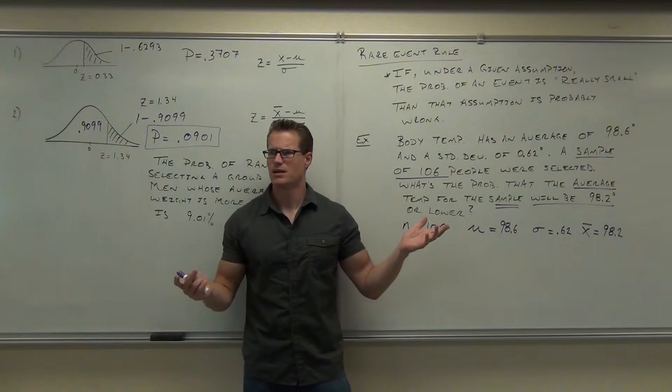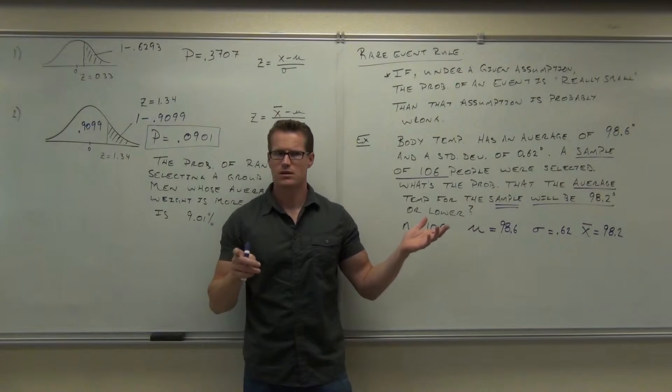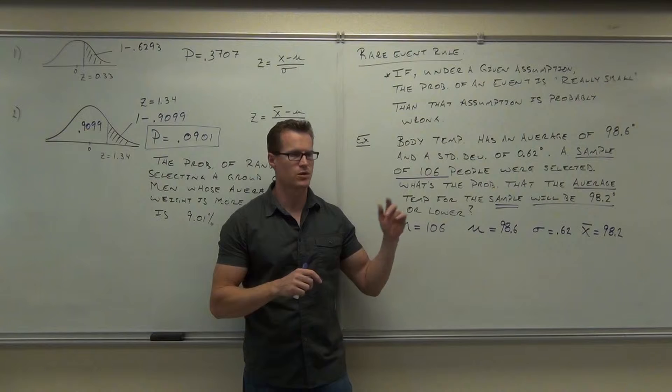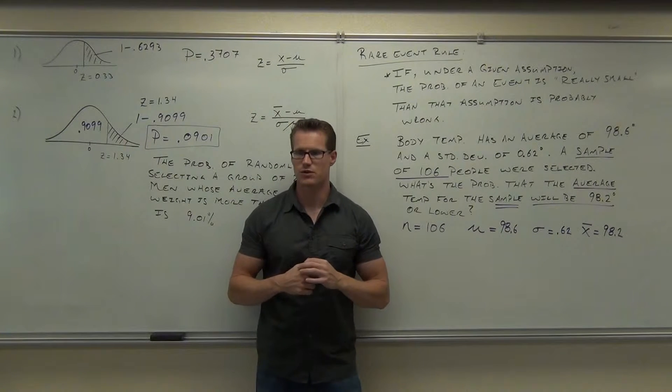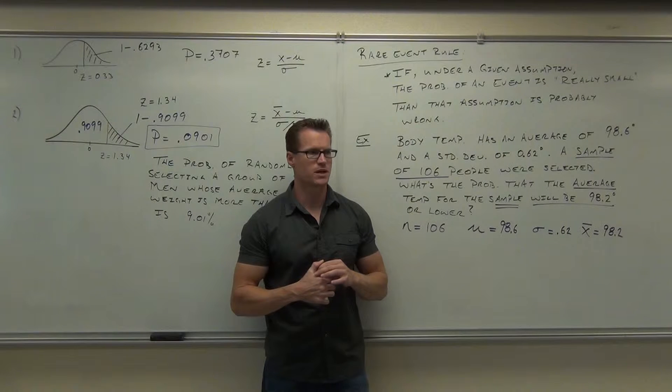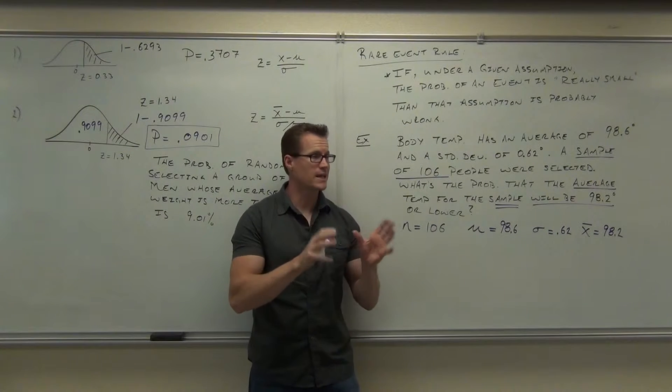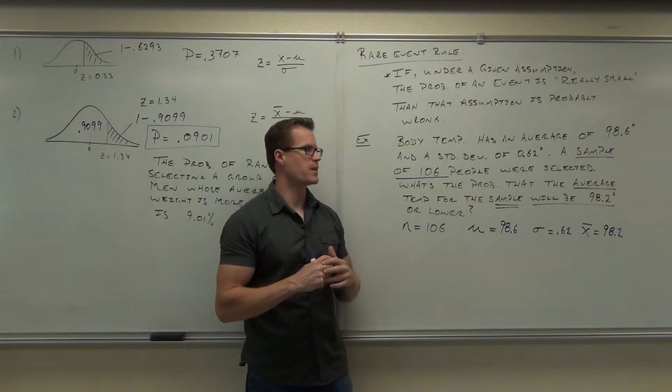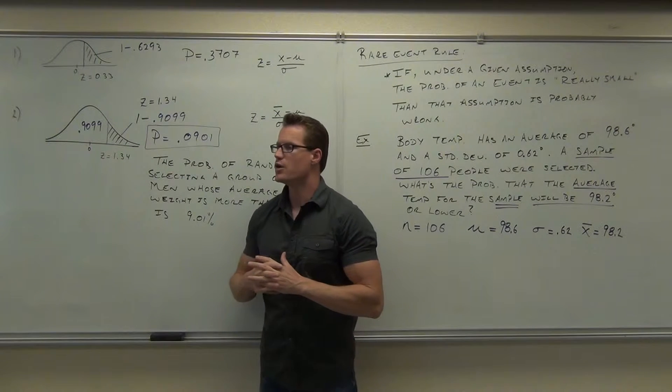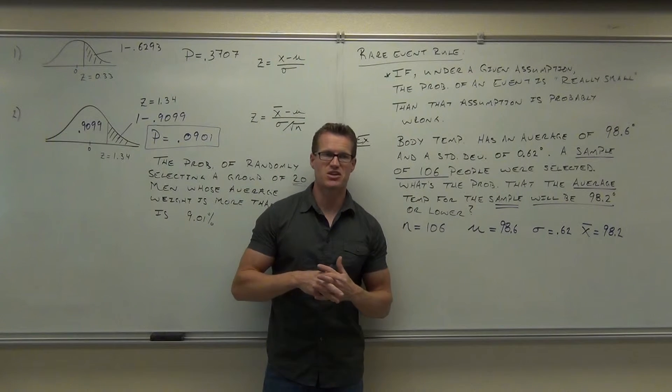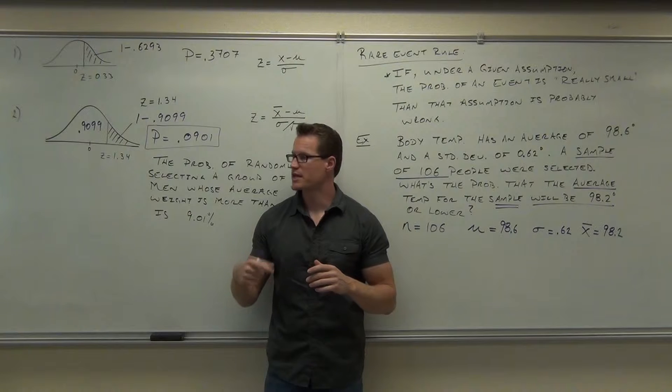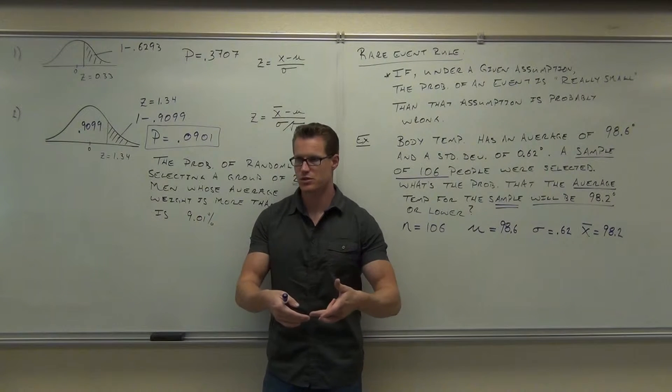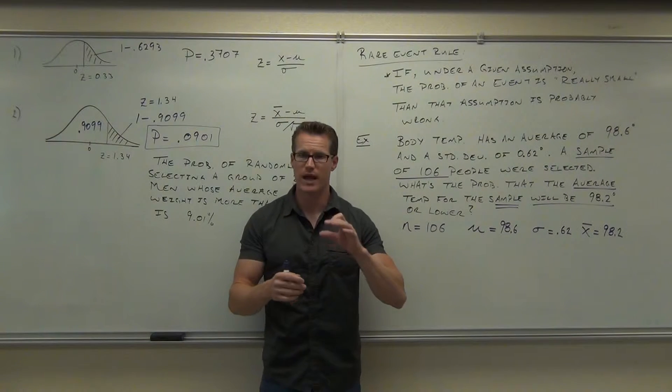But wait a second. I didn't say anything about being normally distributed. Do I have to have that statement if my n is bigger than 30? Read through your conditions. Should be on your previous page. Okay, so do I need the statement, the population is normally distributed, if my n is bigger than 30? No, it was a very amazing theorem, the central limit theorem. It said that no matter what your population looks like, this thing could be completely skewed one way. It doesn't even matter. If you're taking sample sizes bigger than 30, your sampling distribution for the mean will be normally distributed, and therefore you can use the standard normal distribution. You can use a z-score if your n is bigger than 30.